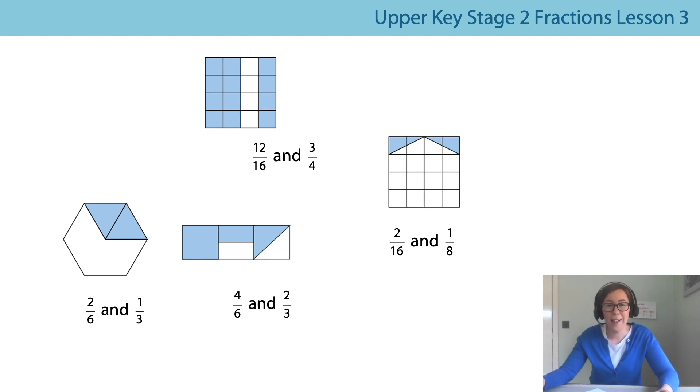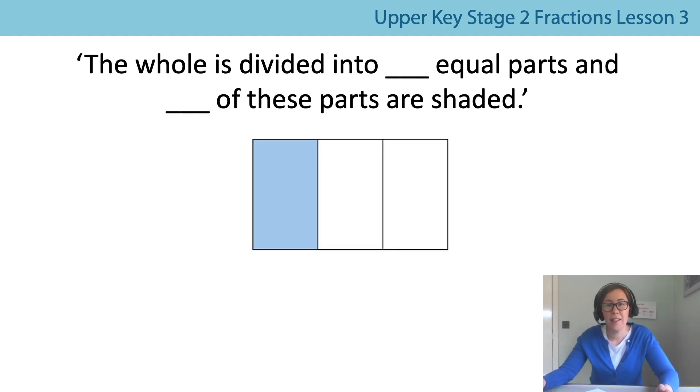Okay, let's move on to today's lesson then. As I said, we are still looking at equivalent fractions. We're going to try and understand how equivalent fractions work so that when you come across them it's a little bit easier to understand. This is our stem sentence for today: The whole is divided into so many equal parts, and so many of these parts are shaded. So looking at the shape I've got there, how would we complete that stem sentence? The whole is divided into three equal parts. And one of these parts are shaded. Excellent. We know that that's one third.